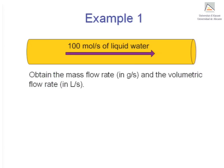Example 1. Let's imagine that there are 100 moles per second of liquid water flowing along a pipe. We need to express this molar flow rate in mass units as grams per second and also in volumetric units as liters per second.